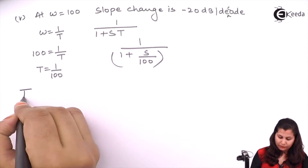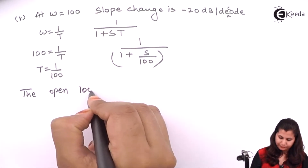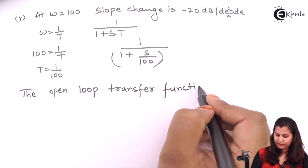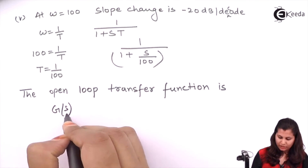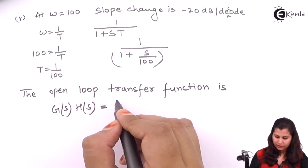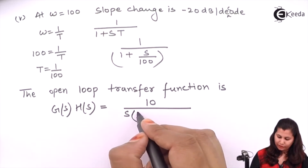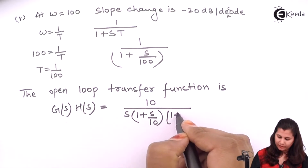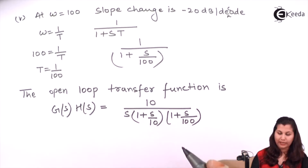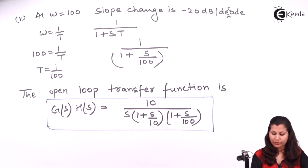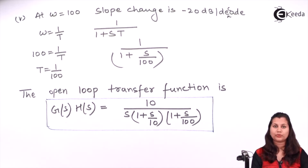Now writing the complete open-loop transfer function G(s)H(s), combining all factors: we have the constant term 10, the integral factor s in the denominator, and the two first-order factors (1 plus s/10) and (1 plus s/100) in the denominator. So the transfer function is G(s)H(s) = 10 / [s(1 + s/10)(1 + s/100)]. In this way we can find the transfer function of a system using the Bode plot.